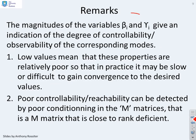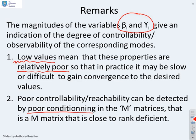The magnitudes of the variables beta j and gamma j give an indication of the degree of controllability and observability of corresponding modes. If you have low values for beta or gamma, then controllability and observability could be relatively poor, making it difficult to control or observe in practice, and convergence could be quite slow. Poor controllability and observability can be detected by poor conditioning of the corresponding matrices.